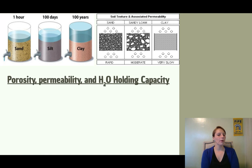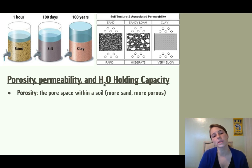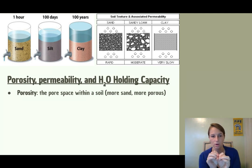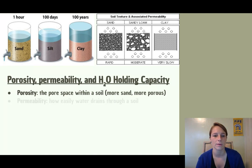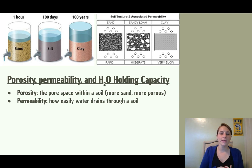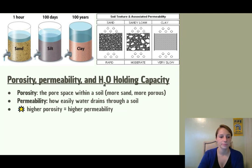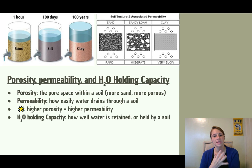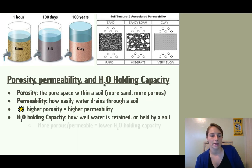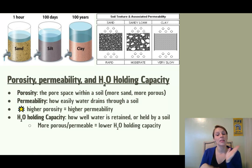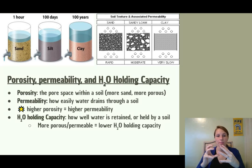Now let's talk about porosity, permeability, and water holding capacity. Porosity is the pore space within a soil — more sand means more porous because those bigger particles have more pore space between them. Permeability is how easily water drains through soil; higher porosity means higher permeability. Water holding capacity is how well water is retained by soil — the more porous or permeable the soil, the lower the water holding capacity, because water drains straight through rather than being held.